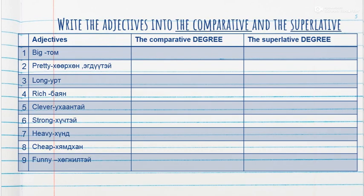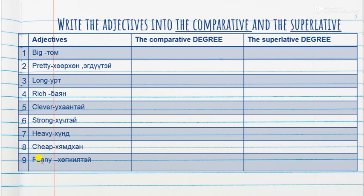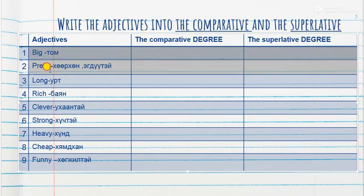Okay students, please write the adjectives into the comparative and superlative forms. Example: big — bigger — the biggest. Pretty — prettier — the prettiest. Long — longer — the longest.